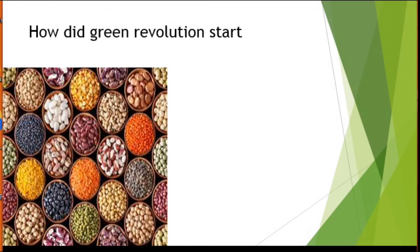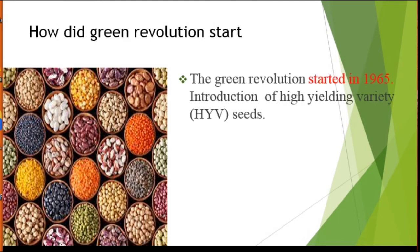How did Green Revolution start? The Green Revolution started in 1965 with the first introduction of high yielding variety of seeds in Indian agriculture. The end result of the Green Revolution was to make India self-sufficient in food grains. Due to the success of Green Revolution in Mexico, its technology spread worldwide in the 1950s and 60s.